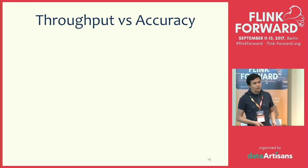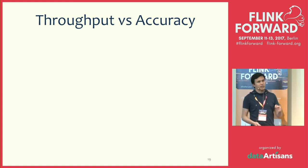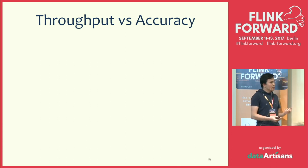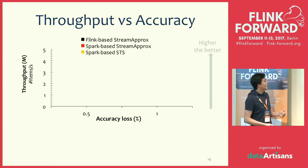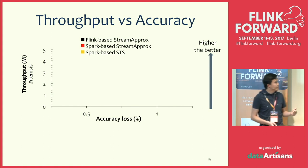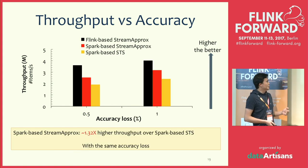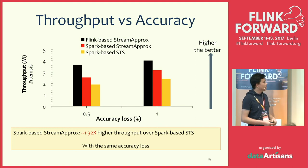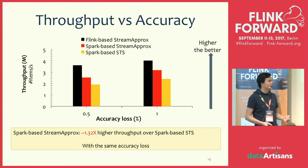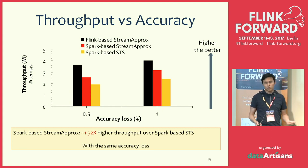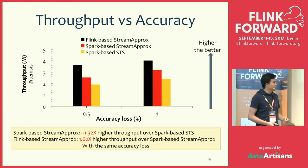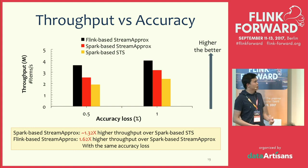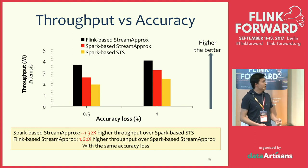With the Flink implementation, we achieved even better performance — 1.3 times higher throughput over Spark-based Stream Approx with sampling fraction less than 60%. Looking at the accuracy trade-off, we keep accuracy the same and measure throughput. The X axis shows accuracy loss and the Y axis shows throughput — higher is better. The Spark-based Stream Approx achieves around 1.32 times higher throughput over Spark-based stratified sampling at the same accuracy. For the Flink implementation, it achieved even better — 1.62 times higher throughput over Spark-based Stream Approx at the same accuracy.